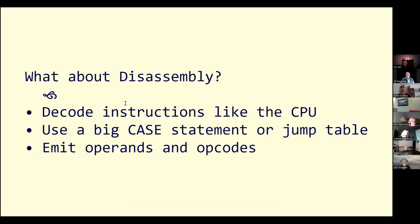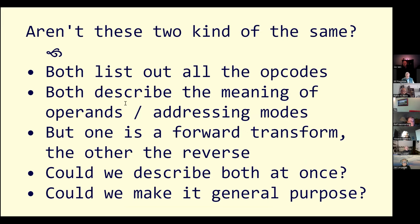But what about disassembly? A lot of disassemblers take the approach of a lookup table and decode instructions a bit like how the CPU works — using a big case statement. They have special logic to emit the operands and then the opcodes. What I got to thinking is: aren't these two kind of the same problem? In both cases you need to list out all the opcodes and describe the meaning of the different operands and addressing modes. It's just the difference between one being a forward transformation and the other being the reverse. Maybe we could describe both at the same time and come up with a general-purpose vocabulary.